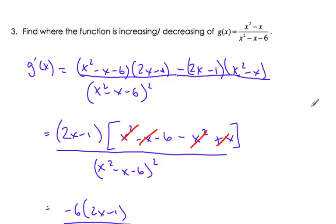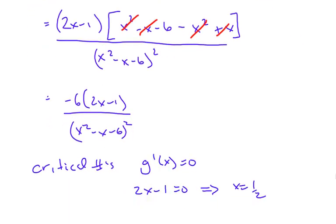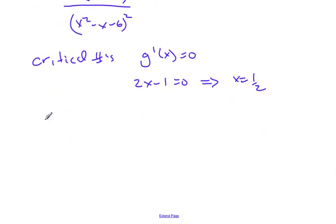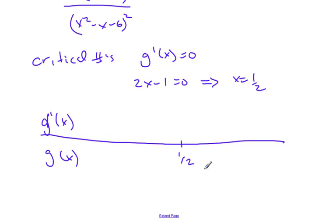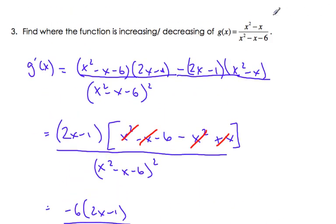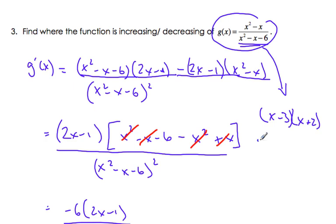If I want to find increasing and decreasing, I've found the critical numbers, and now I need to make a number line looking at g'(x) and g(x). I put the values where I have critical numbers, but I also have to put where the function is not defined. If I look at my function here, I can factor that to (x - 3)(x + 2). Therefore, x = 3 and x = -2 are vertical asymptotes.